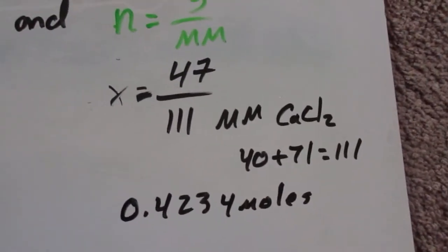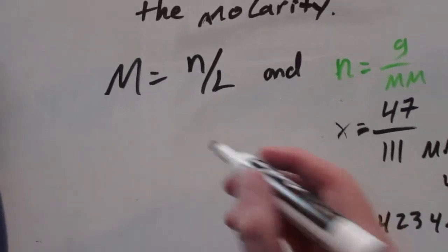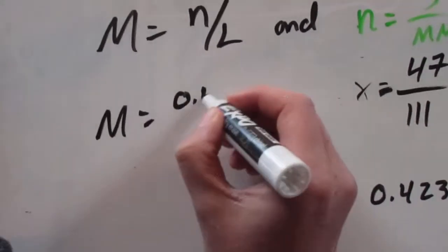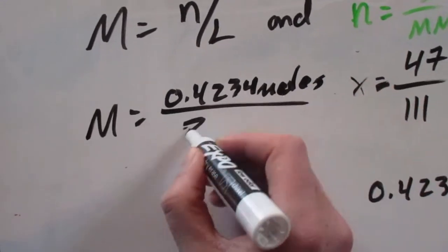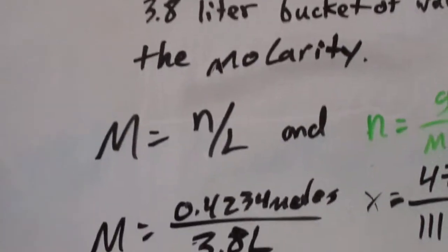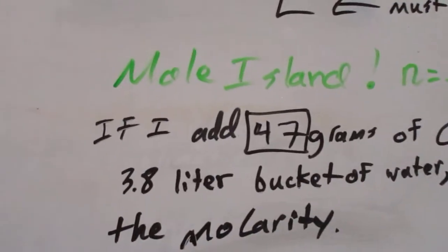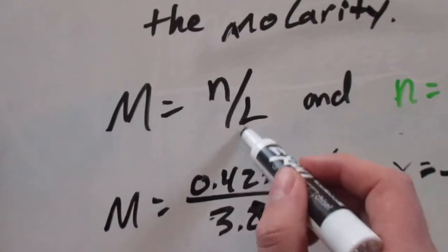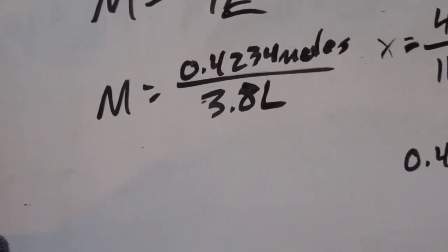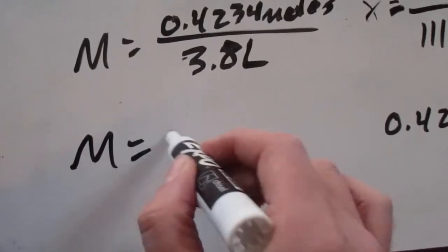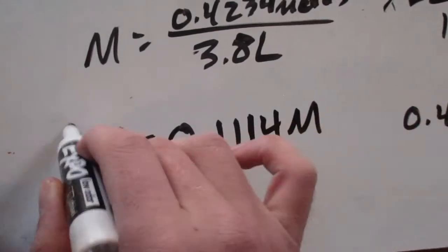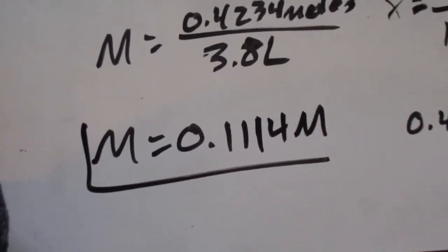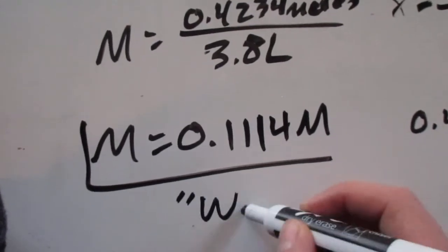And really quickly, getting my calculator out, 47 divided by 111 is 0.4234 moles. Well, now we can plug it in this equation. Moles equal 0.4234 moles. I'm in 3.8 liters, and again, it is liters. So that's liters, so we're good to go. So this divided by 3.8, concentration equals 0.1114 molar, which is overall, I would say, a pretty weak solution.